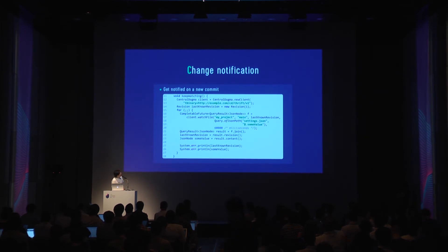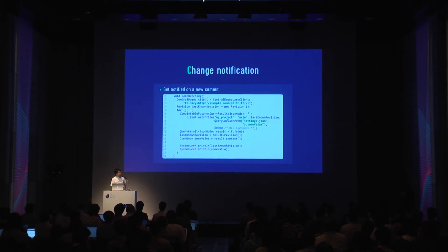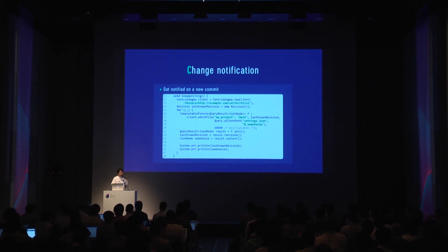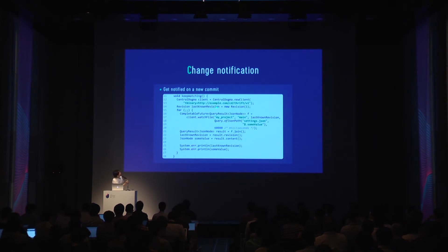At the beginning of this talk I mentioned there should be a way to get notified when a change is pushed to a repository, so that some settings are applied without restarting servers. This is the change notification feature. If you store your settings in Central Dogma, you can get notified when your settings change and then retrieve the new content very easily. Let's take a look at this example.